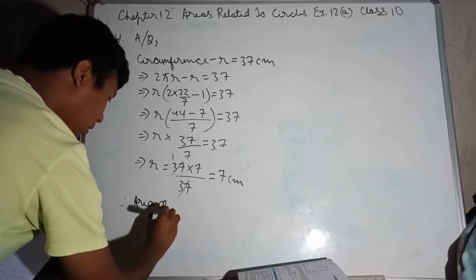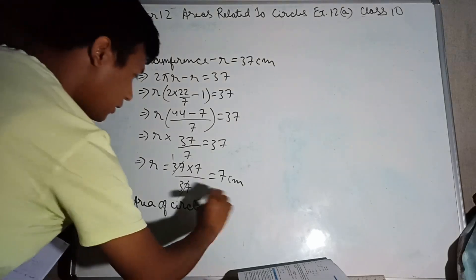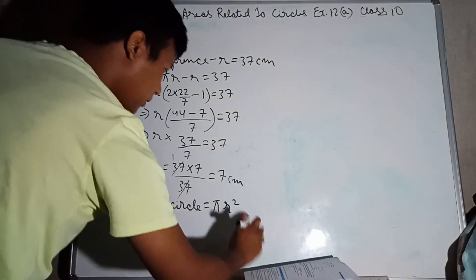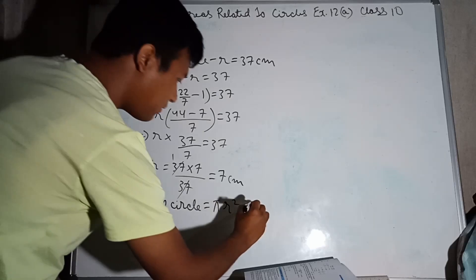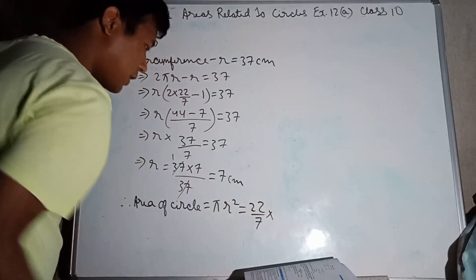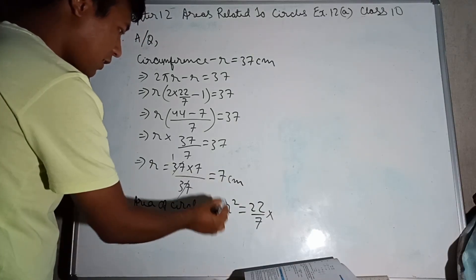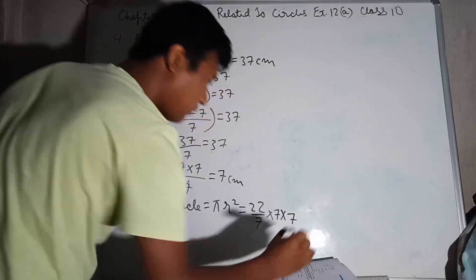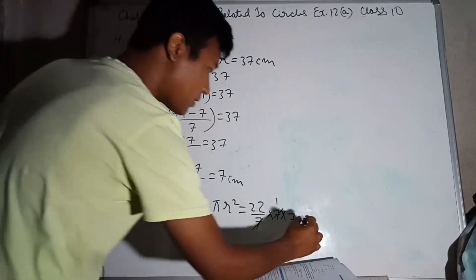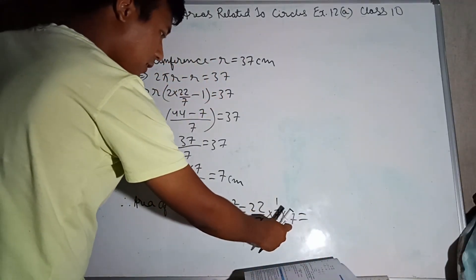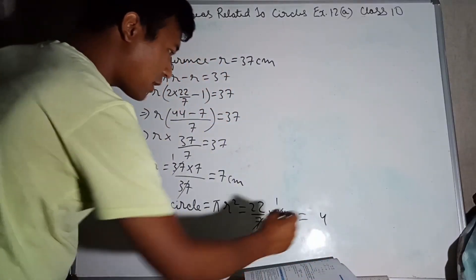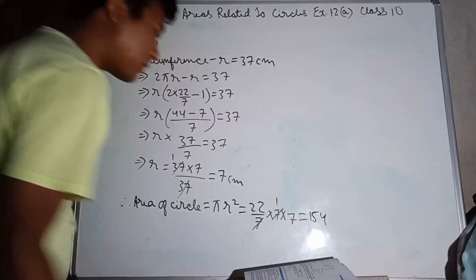Area of the circle formula is πr². This is equal to pi, whose value is 22/7, into r squared, which is 7 squared. r equals 7. So 22/7 × 49: the 7s cancel, giving 22 × 7 = 154 cm².